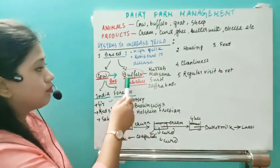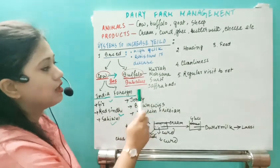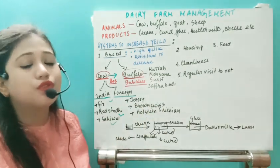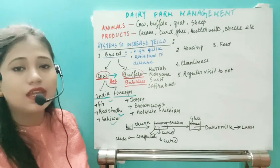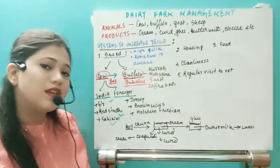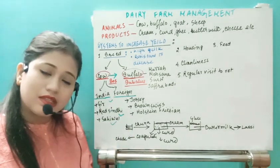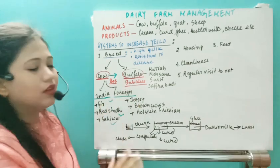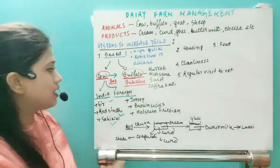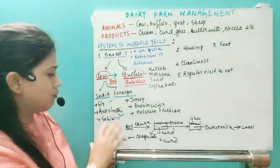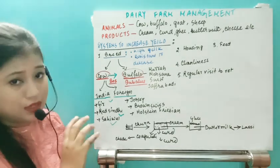For buffalo breeds, the important indigenous breeds are Murrah, Mehsana, Surti, and Jaffarabadi. All are indigenous breeds with high productivity and high nutrient quality compared to cow milk. The scientific name of buffalo is Bubalus bubalus, and for Indian cow it is Bos indicus.